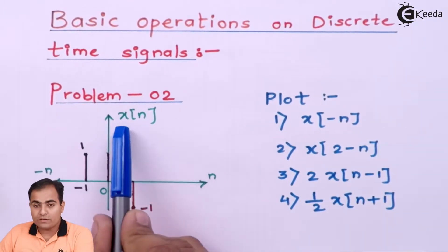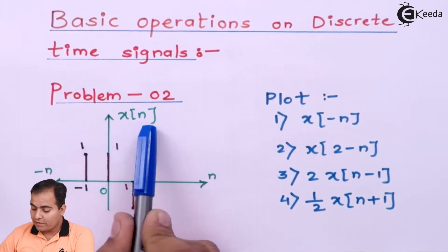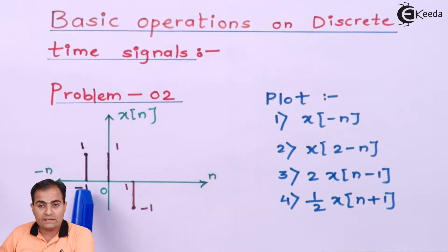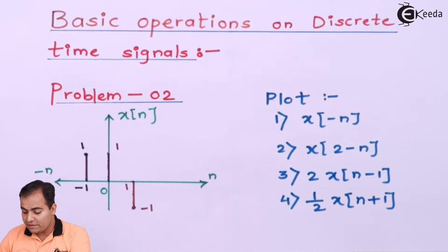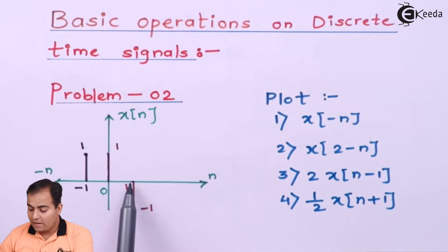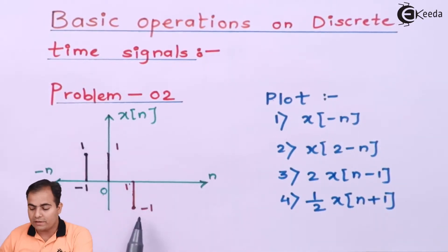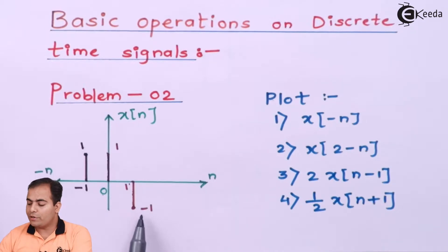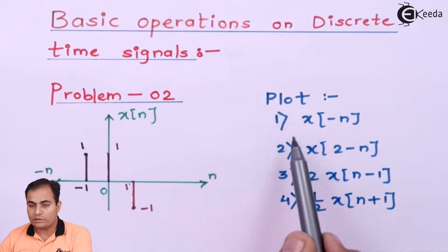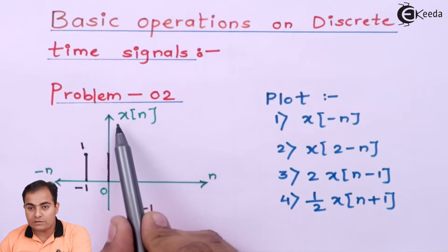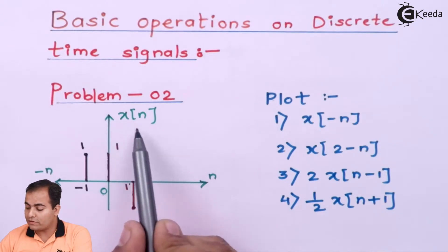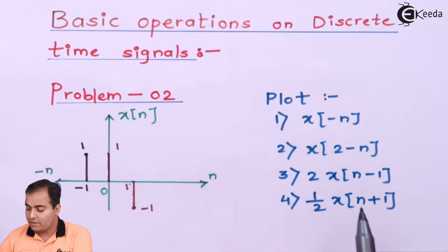In problem number 2, x of n is already plotted. We have plotted 3 samples: the first sample is at minus 1, the second sample is at 0, and the third sample is at 1, having amplitudes 1, 1, and minus 1 respectively. We are going to plot 4 different operations of x of n.